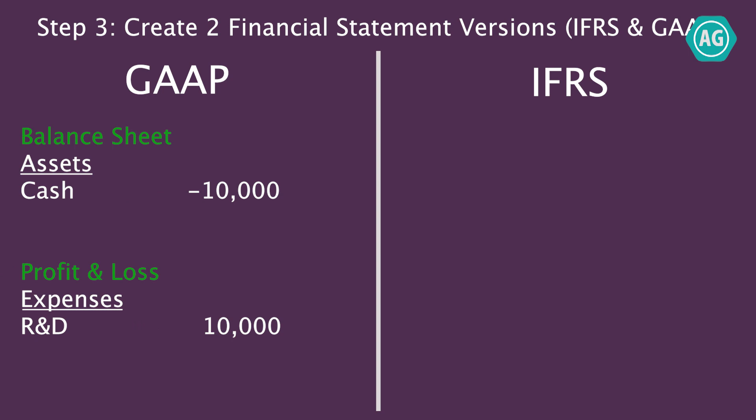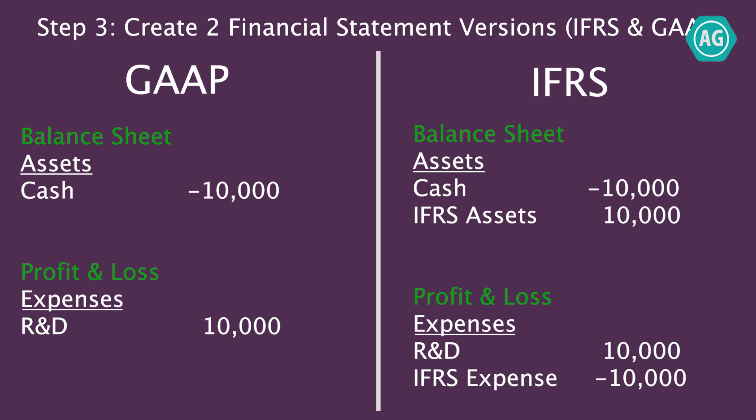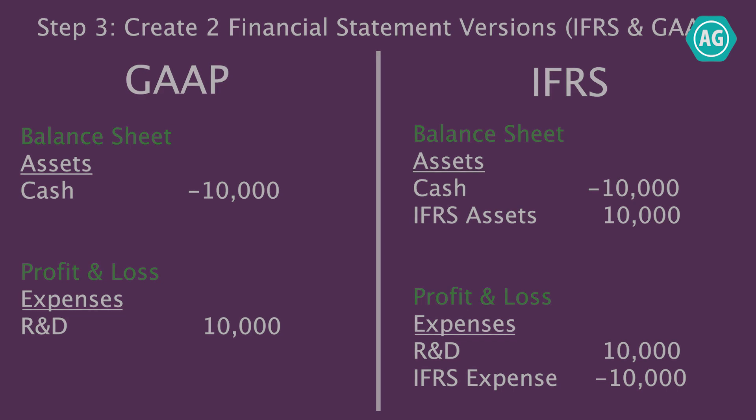Now I have reported according to IFRS using the account approach. I create two financial statement versions: the first for GAAP, which includes only the cash and expense accounts — not the IFRS adjustment accounts. The second financial statement version is for IFRS, which includes all the GAAP accounts plus the adjustment accounts. When I report for GAAP I use the GAAP version, and when I report for IFRS I use the IFRS version. So this is the account approach: one ledger, multiple financial statement versions, plus adjustment accounts.